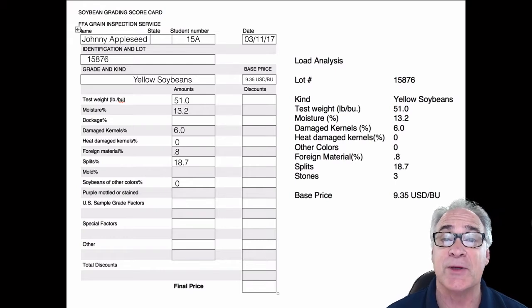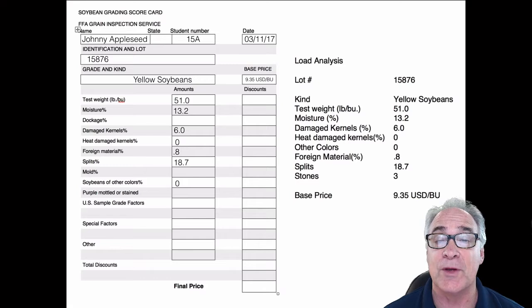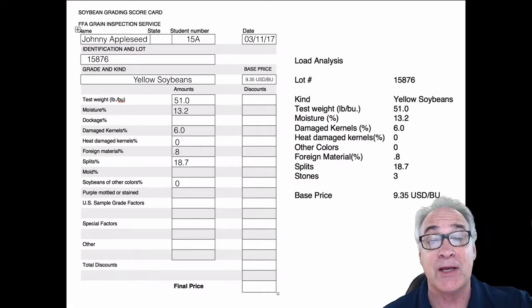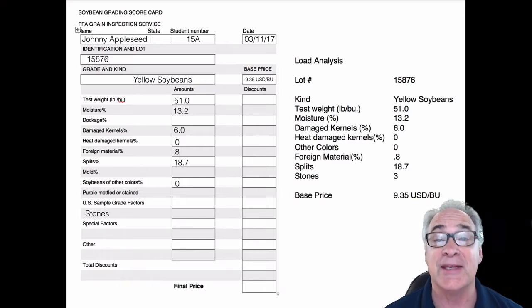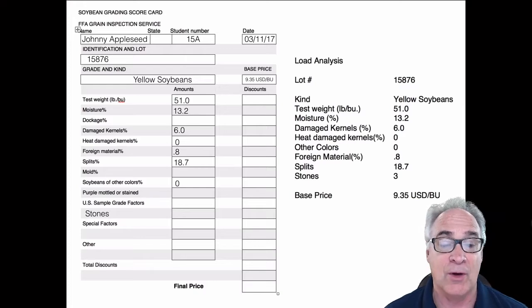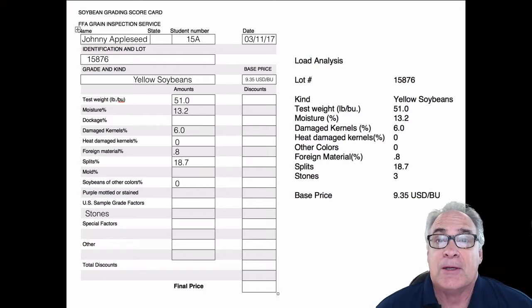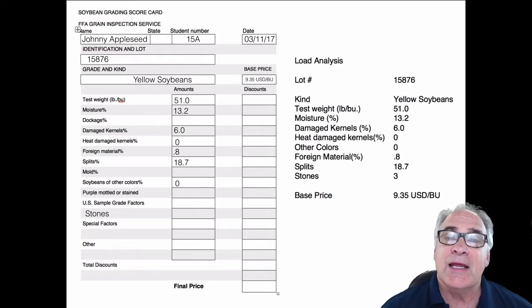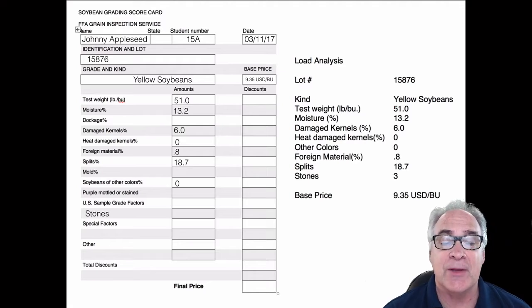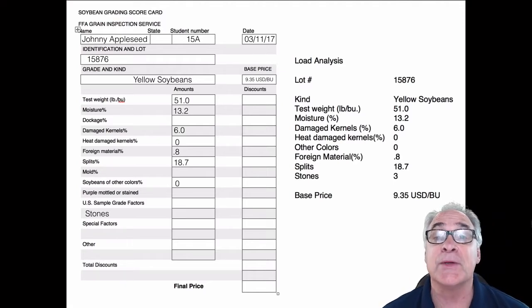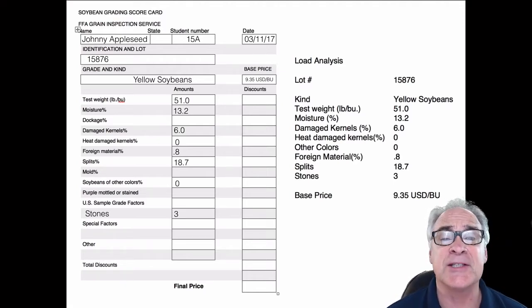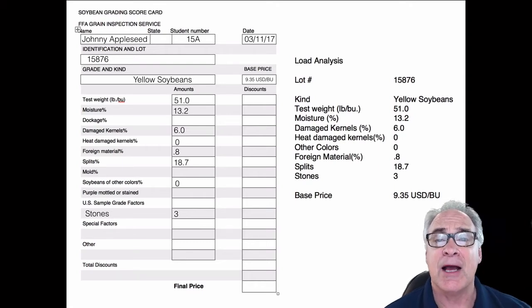So make sure if it isn't listed you don't have to put it on there at all. Splits percentage is 18.7, and then of course there isn't any other colors of soybeans, so you put a zero, but because it's in the load analysis that needs to go there. And so on. Once you get all of those, the other thing too is sometimes they'll put something in there like in this case stones. Please write it in the amounts column because that's going to be important later on.